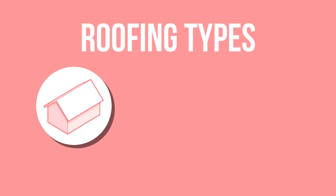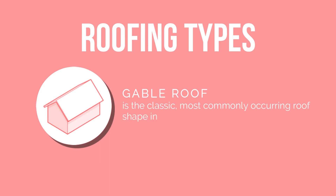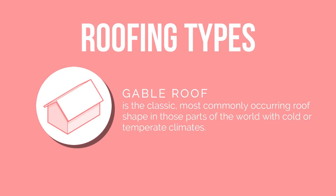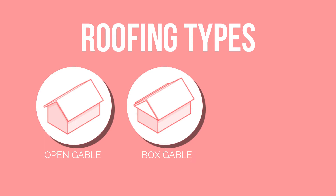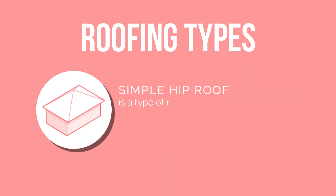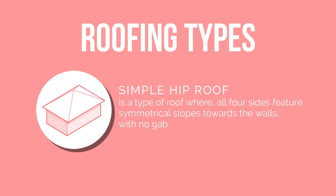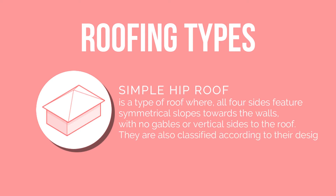Here are the basic roof types. Gable roof: a gable roof is the classic, most commonly occurring roof shape in those parts of the world with cold and temperate climates. They are classified into various types: open gable, box gable, and front gable. Simple hip roof: it is a type of roof where all four sides feature symmetrical slopes towards the walls, with no gables or vertical sides to the roof.